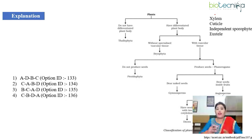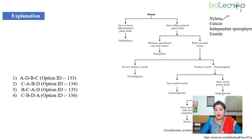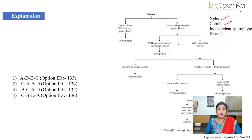Here we have to arrange xylem, cuticle, independent sporophyte, and eustele in evolutionary sequence. When we talk about xylem, evolutionarily, pteridophytes are the first terrestrial plants to possess vascular tissues like xylem and phloem. When we talk about cuticle, cuticle occurs in all land plants including mosses, so cuticle must be first placed in the evolutionary sequence. But it's better to confirm by looking at the other options as well.